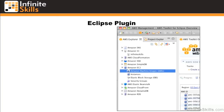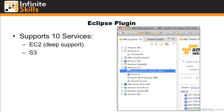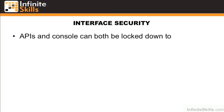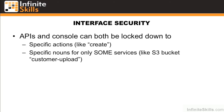For developers, I also highly recommend the Eclipse plugin. It supports 10 services such as EC2, S3, SQS, DynamoDB, and so forth. For interface security, the APIs and console can both be locked down to specific actions or verbs such as create, and for specific nouns or resources for only some services, such as an S3 bucket named customer upload.